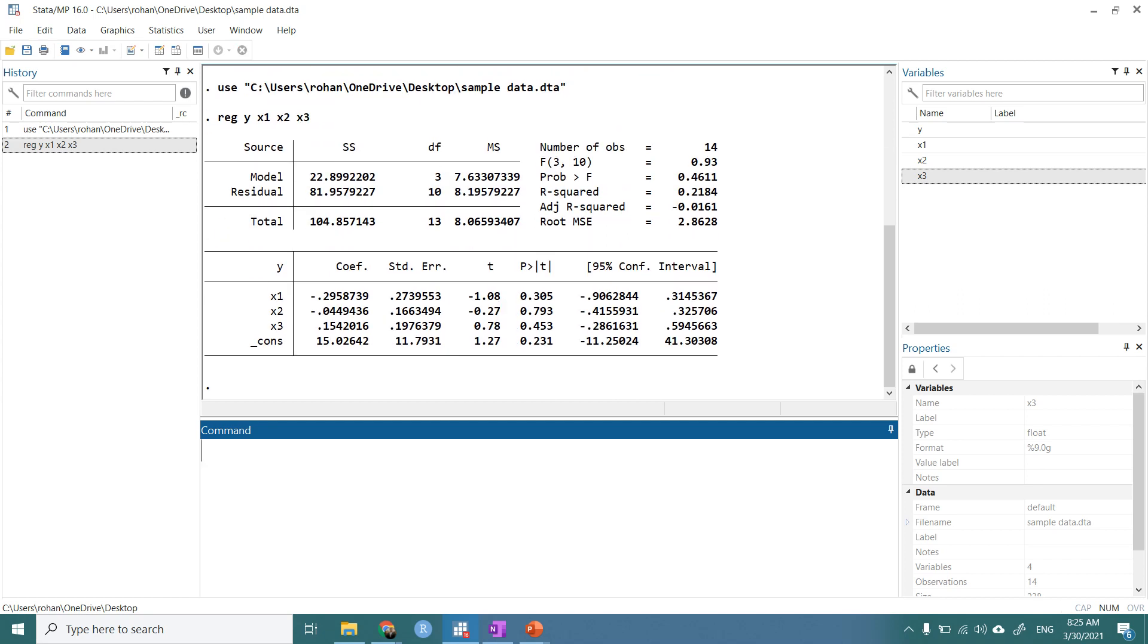So our results are: this is x1, the coefficient of x1, it's beta1, beta2, beta3. So let's do the second step.